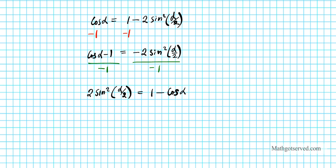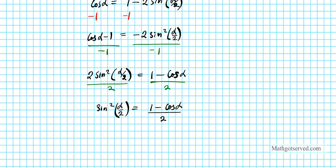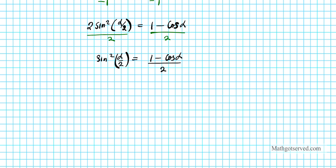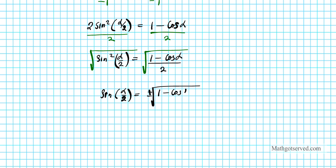Now divide both sides by 2, so that yields sine squared of alpha over 2 equals 1 minus cosine alpha, all divided by 2. To isolate sine, we take the square root of both sides, and we get sine of alpha over 2 equals plus or minus the square root of 1 minus cosine alpha, divided by 2. There is your half angle identity for sine.